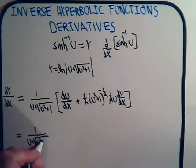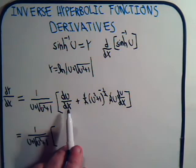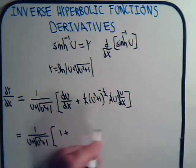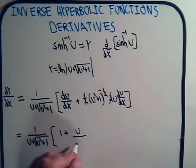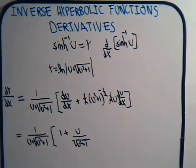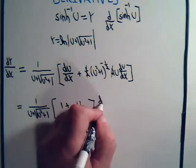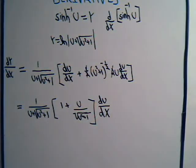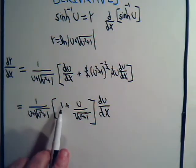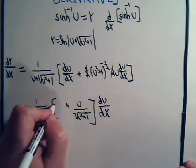This becomes square root of u squared plus 1 times, this is going to be 1, plus u divided by the square root of u squared plus 1. And this is times du/dx. Okay, let's see, the 1 we can write this as the square root of u squared plus 1, divided by the square root of u squared plus 1.